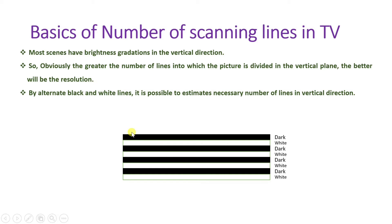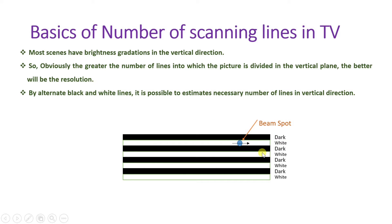Scanning happens line by line — a beam moves horizontally and traces the entire video in sequence. There will be black lines as well as white lines. The key question is: how many lines are required so that the human eye cannot separate two adjacent lines? That is what we are calculating.